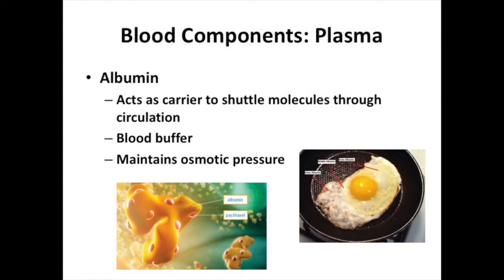In this image you can see a very large yellow albumin protein molecule with a red, round structure embedded on it — that is a drug. In this case, paclitaxel, a chemotherapy drug, and the albumin is shuttling that hydrophobic paclitaxel through the blood to its site of action. The two other functions of albumin — acting as a buffer to prevent big changes in blood pH, and helping maintain osmotic pressure — we'll cover in detail in the kidney chapter.